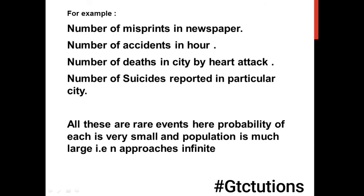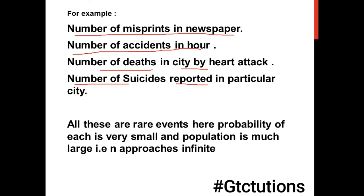For example, the number of misprints in a newspaper — here the probability of occurrence is very small, approaching zero, and the total words in the newspaper are very large, meaning population is very large, so n approaches infinity and p approaches zero. Other examples include number of accidents in an hour, number of deaths in a city by heart attack on a particular day, number of suicides reported in a particular city, and chance of a fan falling — all are rare events.